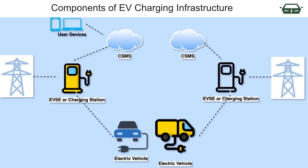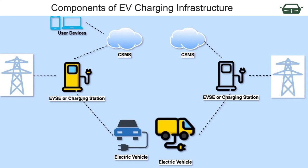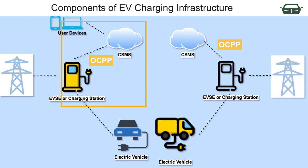Let's look at where OCPP sits in an EV charging setup. This diagram shows different components involved in EV charging infrastructure. One critical component here is CSMS, or Charging Station Management System. It is the backend system that allows charging point operators to manage and supervise operations at the charging facility, such as fixing charging tariffs, generating reports, and remotely managing the chargers. The communication between the EVSE and CSMS is key to smoothly running charging operations, and this is where OCPP comes into the picture — it is the protocol for communication between the charging station and the Charging Station Management System.